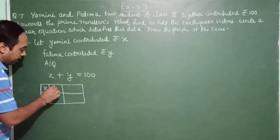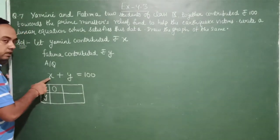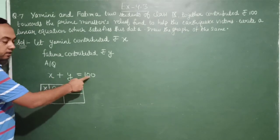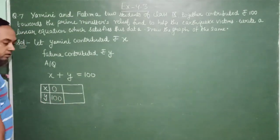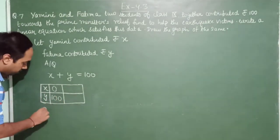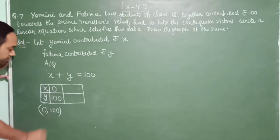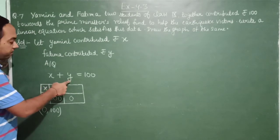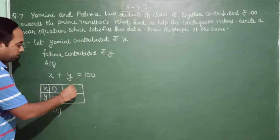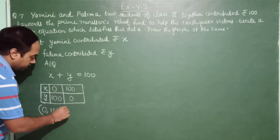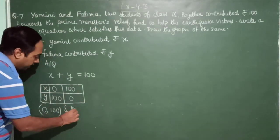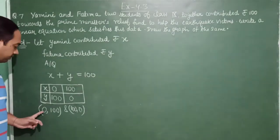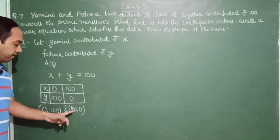So first I am considering x equals 0. Now if x equals 0, then 0 plus y equals 100, this means y equals 100. So the first solution is (0,100). Next time I am considering y equals 0. If y is 0, then x is equal to 100. So the next solution is (100,0). So these are the two solutions: the first one is (0,100) and the second one is (100,0).